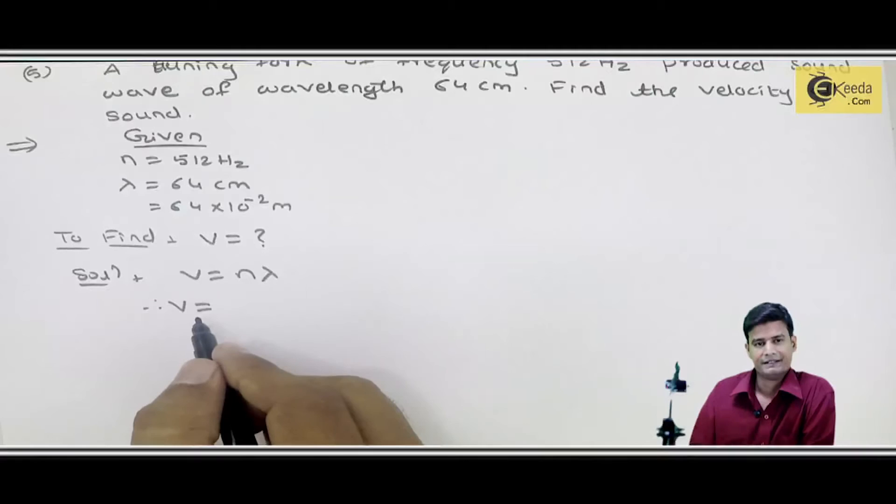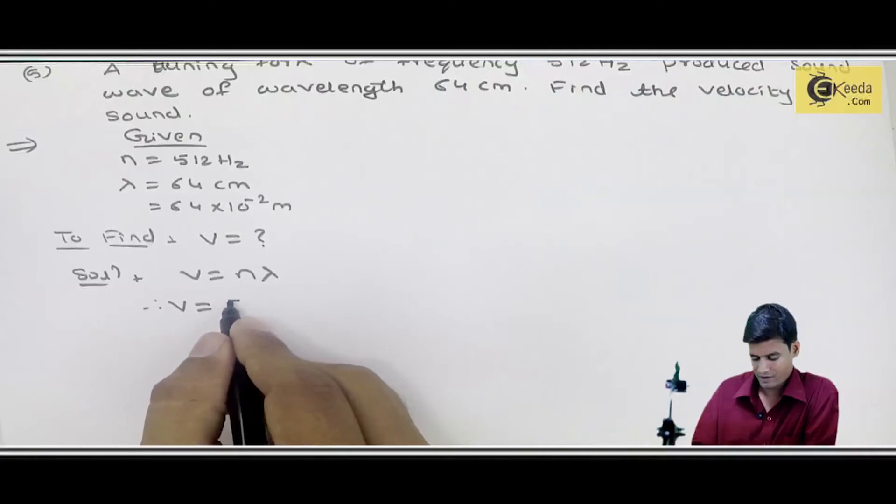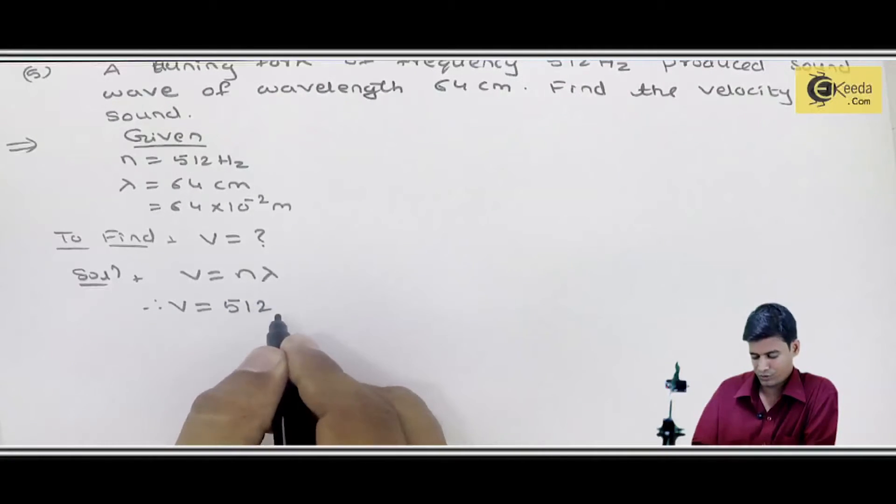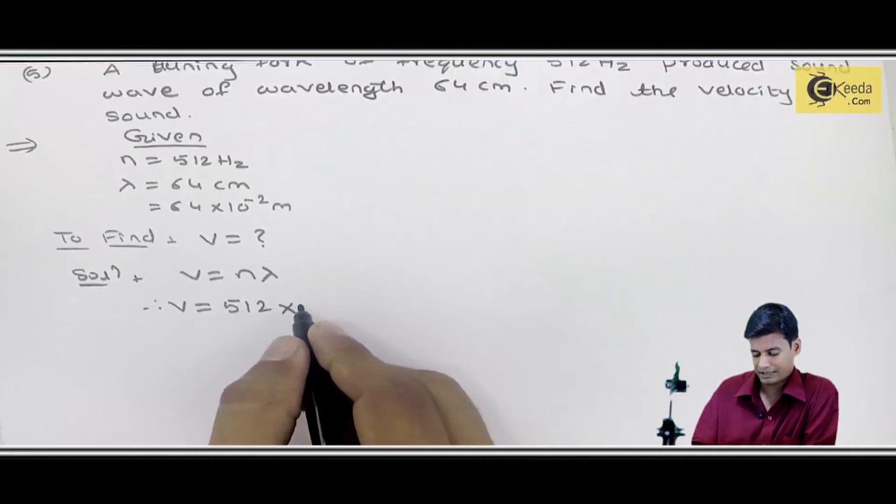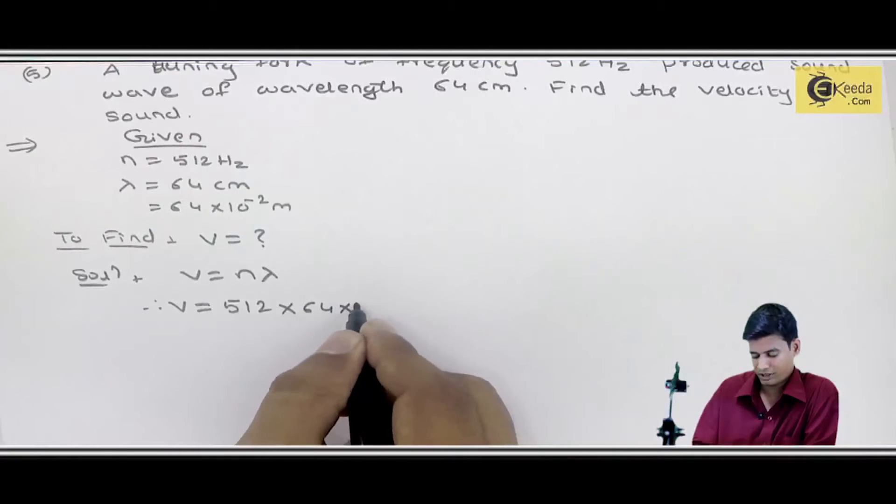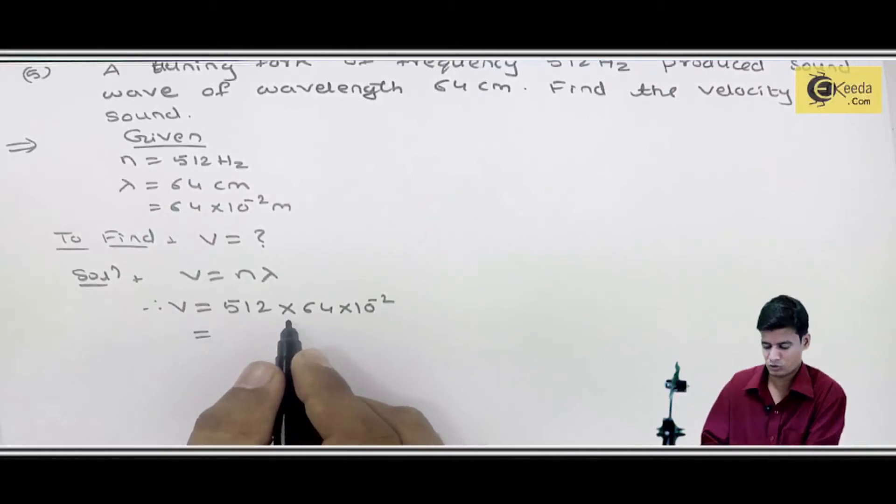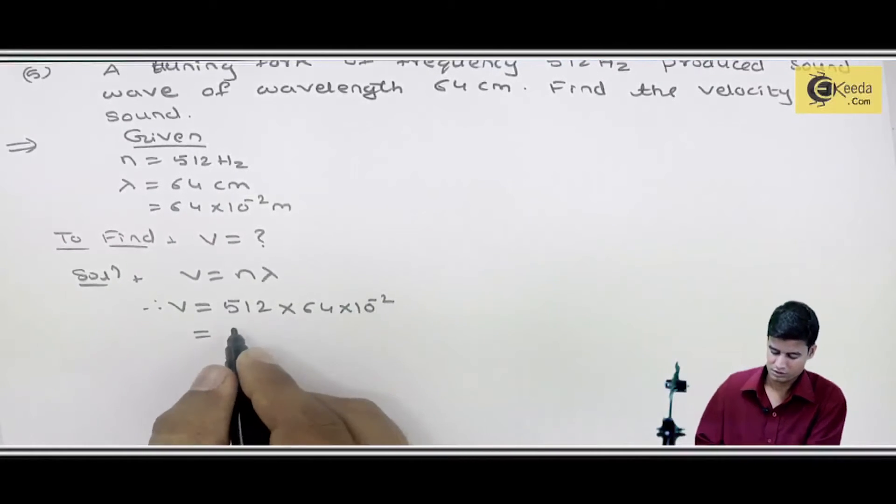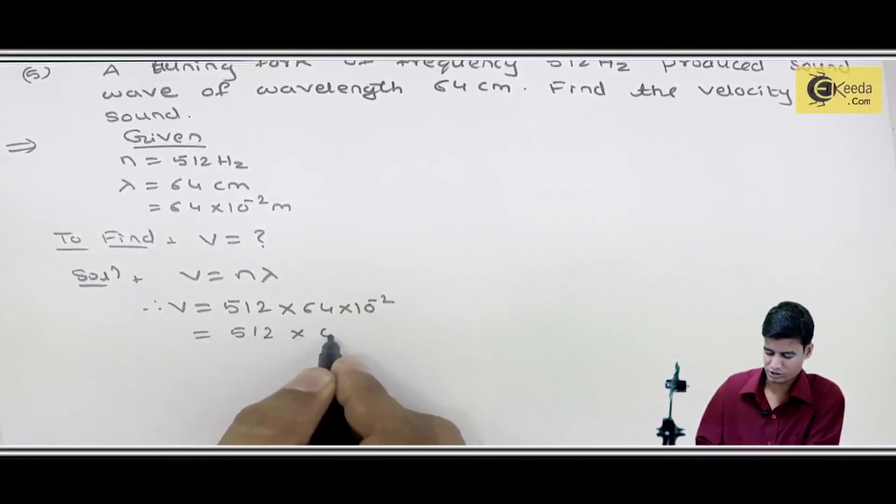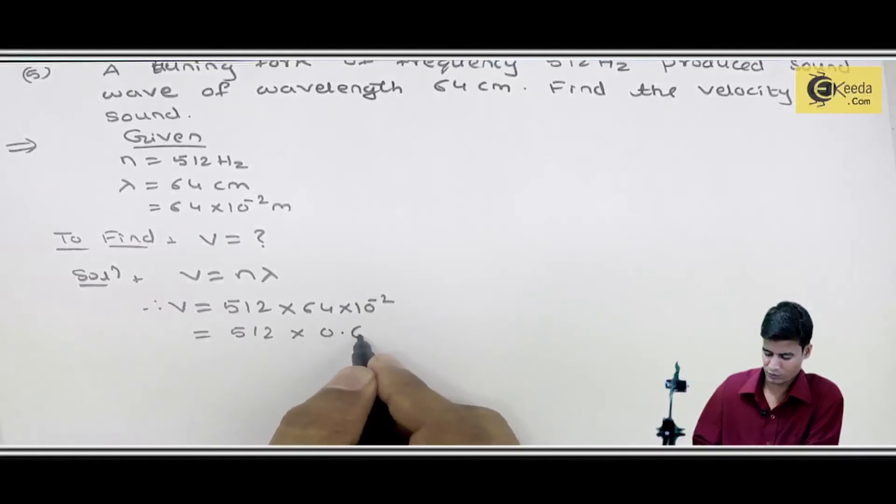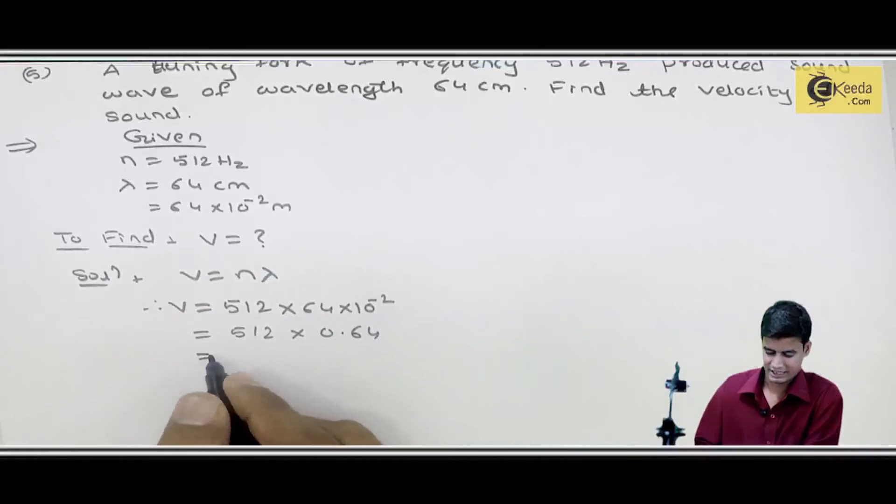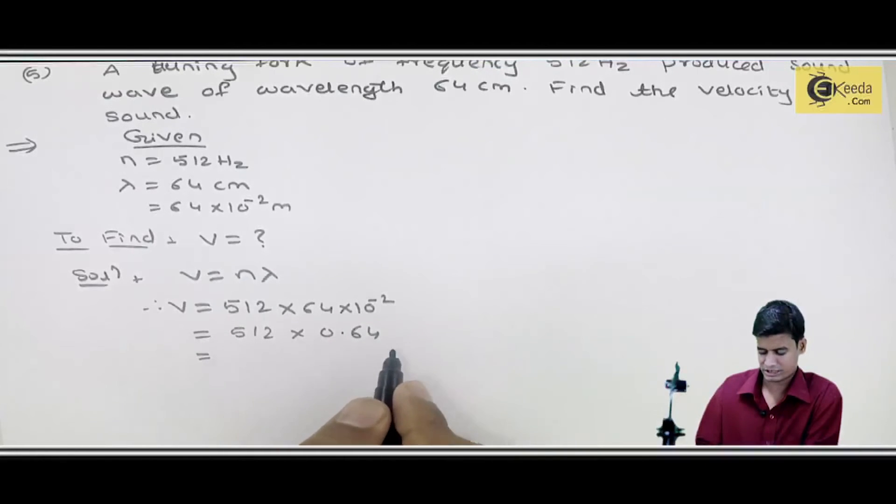So V equals to N. N is 512 into lambda which is 64 into 10 raise to power minus 2. When we multiply 512 into 0.64, the answer comes to 327.68 meter per second.